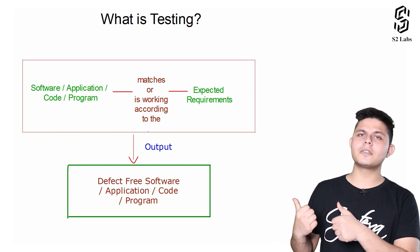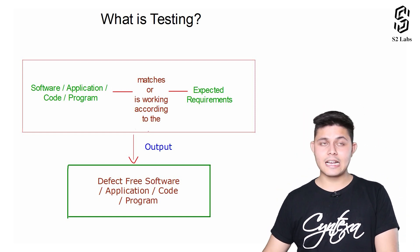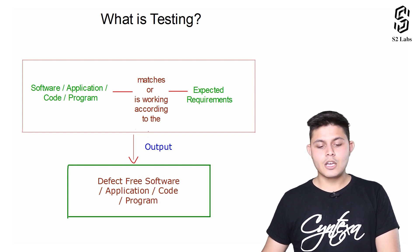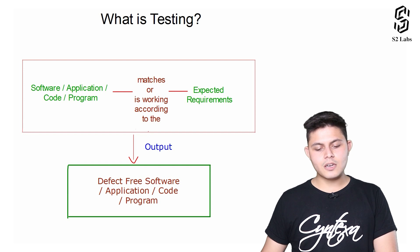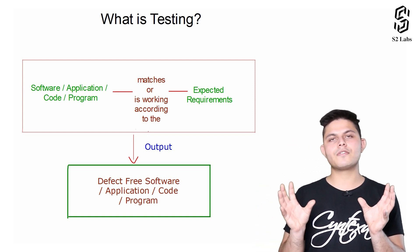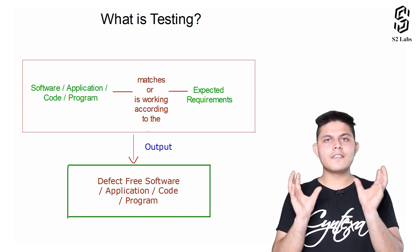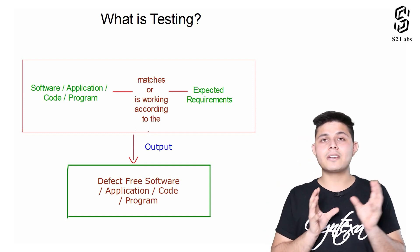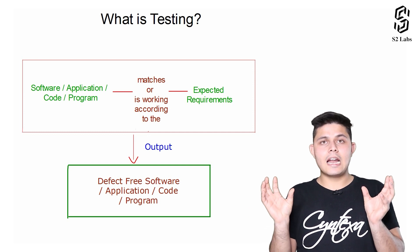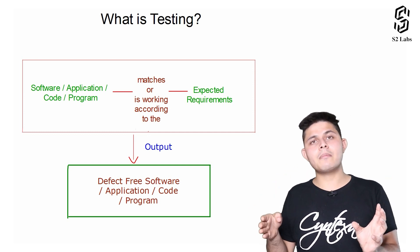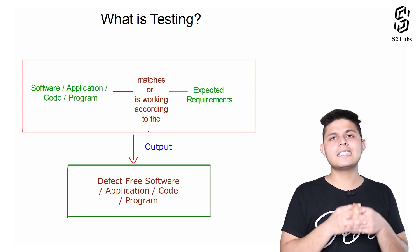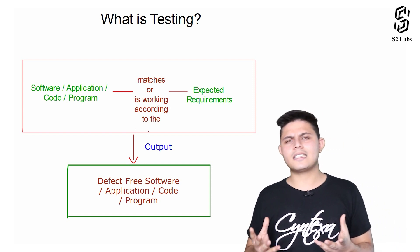With the help of this diagram, I'll explain what exactly testing is. A software, application, code, or program which works according to the expected requirements — this is what testing is about. Whatever system or code you have written should work according to the expected requirements of the end user, and verifying whether it does is exactly what testing means.